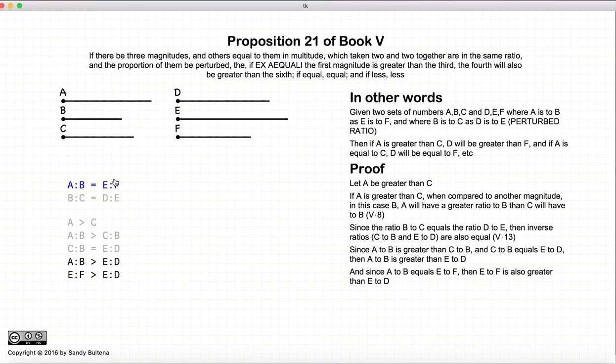A to B is equal to E to F. A to B is also greater than E to D, so therefore E to F is greater than E to D. Well, if E to F is greater than E to D, then D has got to be larger than F, according to proposition 10. So now that we have assumed that A being larger than C results in the proof that D would also be larger than F.